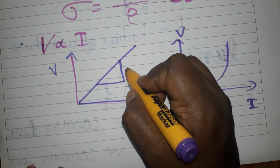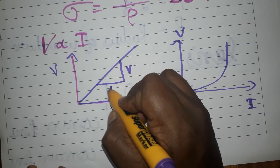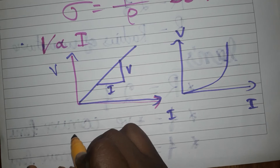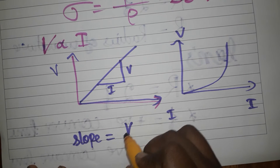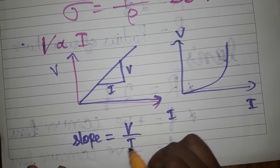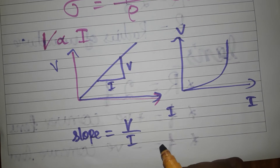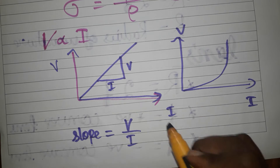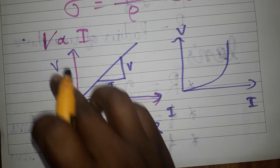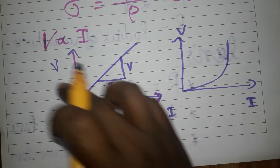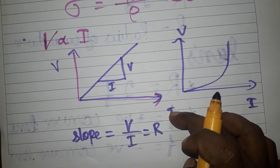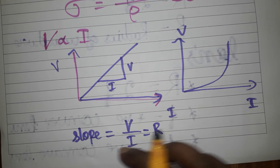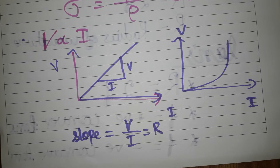The slope of the V versus I graph is V divided by I, which we can call R (resistance). So V should be on the Y-axis and I on the X-axis. The slope of the graph gives you the resistance.